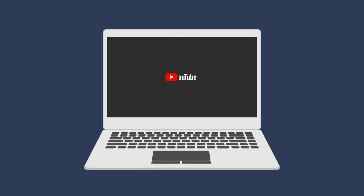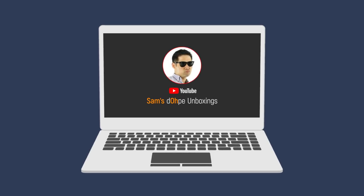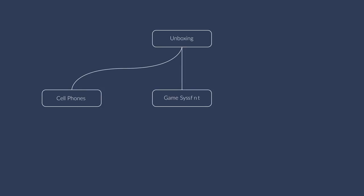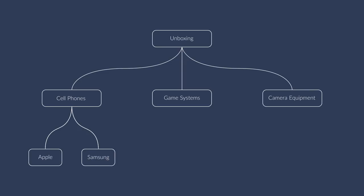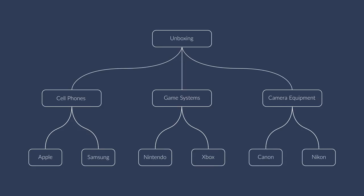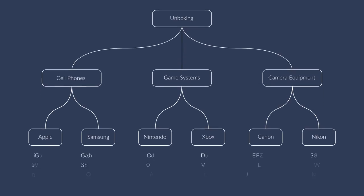Grab a pen and paper and let's start drawing. Let's say I'm creating a new channel where I'll unbox videos on popular tech-related products, so let's add 'unboxing' to the top of the hierarchy. Now what am I going to unbox? Let's add cell phones, game consoles, and camera equipment. Now which brands? Let's add Apple and Samsung under cell phones, Nintendo and Xbox under game systems, and Canon and Nikon under camera brands. We can even add models under each of these categories. This exercise will help you build a framework of topics you can use to quickly qualify or disqualify whether it's a good fit for your desired audience.